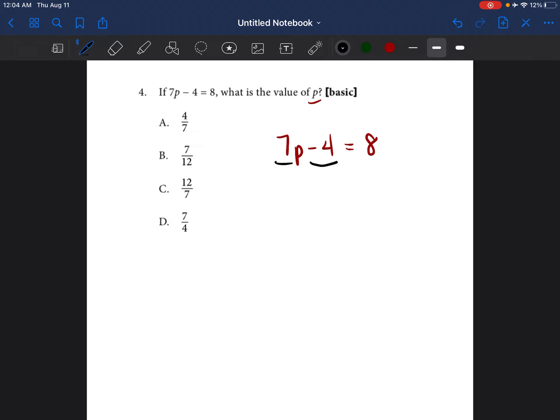If it's being subtracted, in order to get rid of it or put it to the other side, we would add four to both sides. So now it would be 7P is equal to 12.